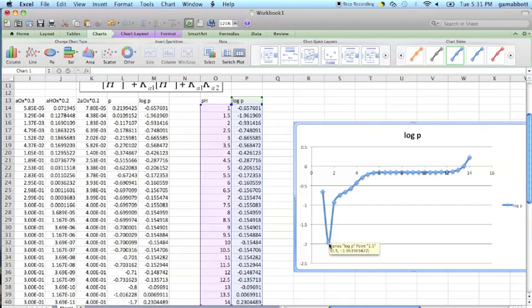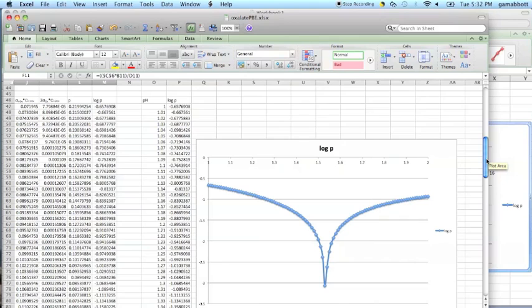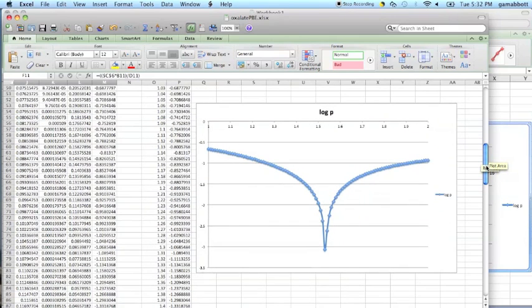Then we might go from pH 1 to pH 2 in steps of 0.01 and when we do that this is what we get for our graph and we see that it bottoms out or hits its true value at a value of 1.53 for the pH.